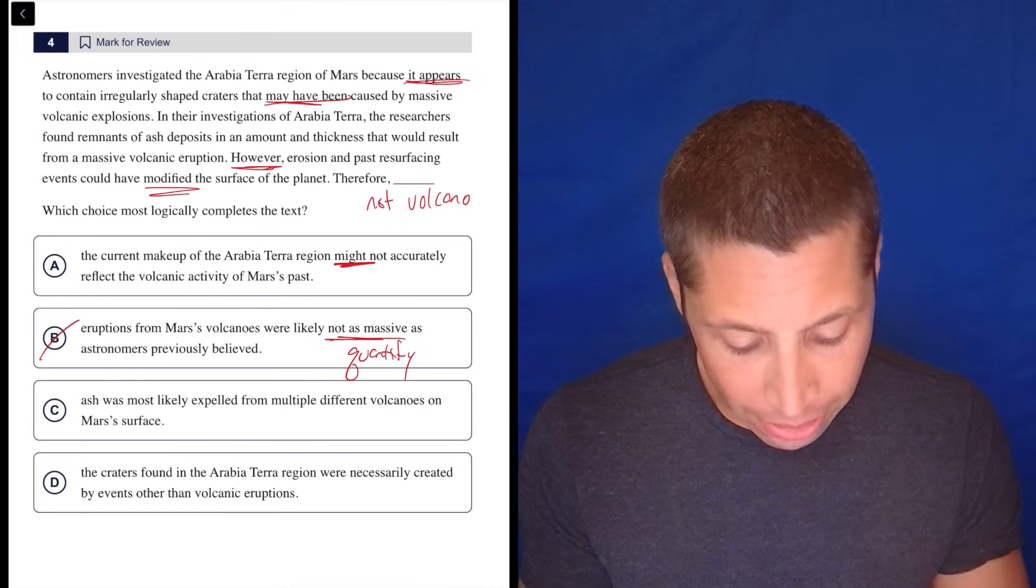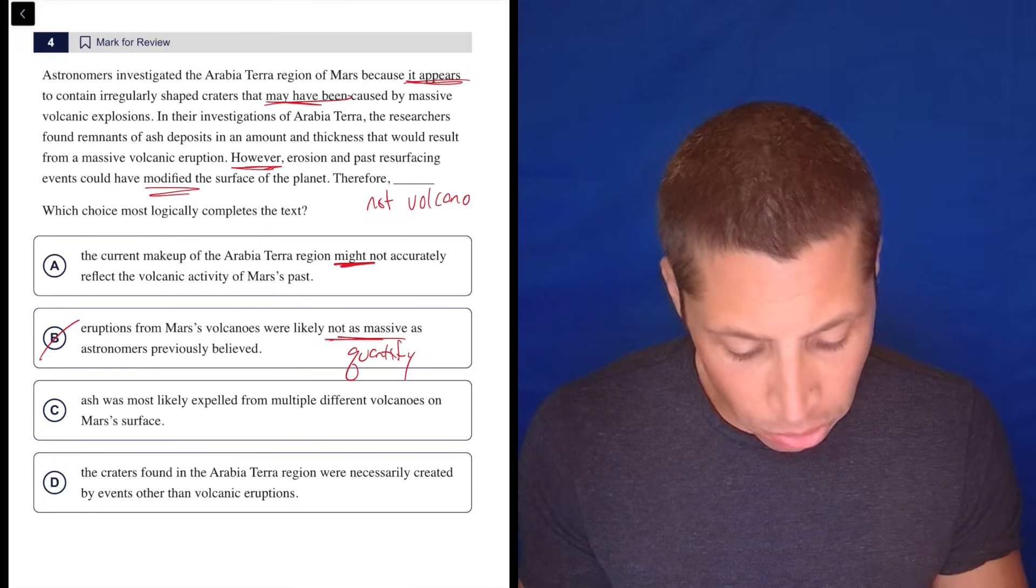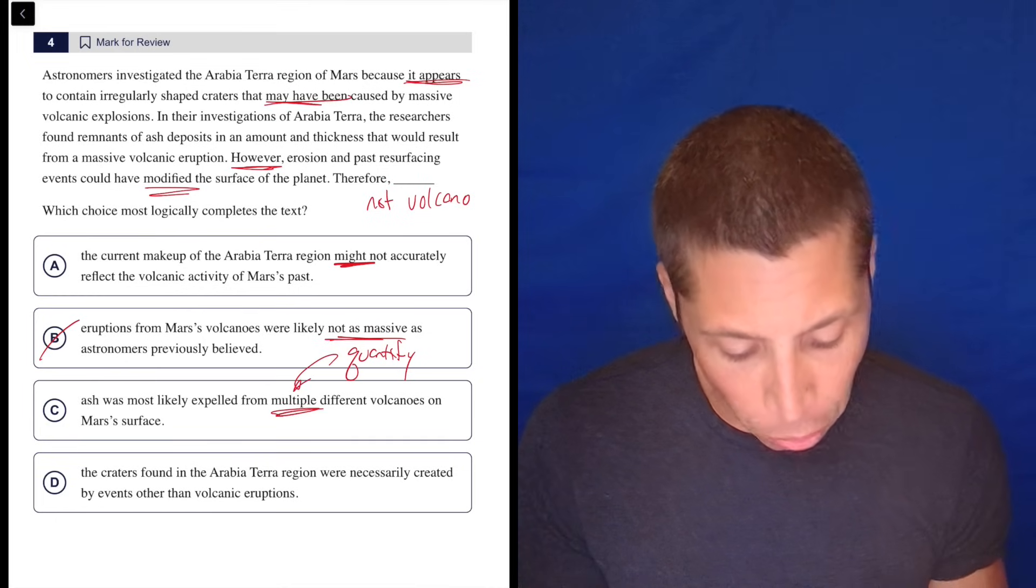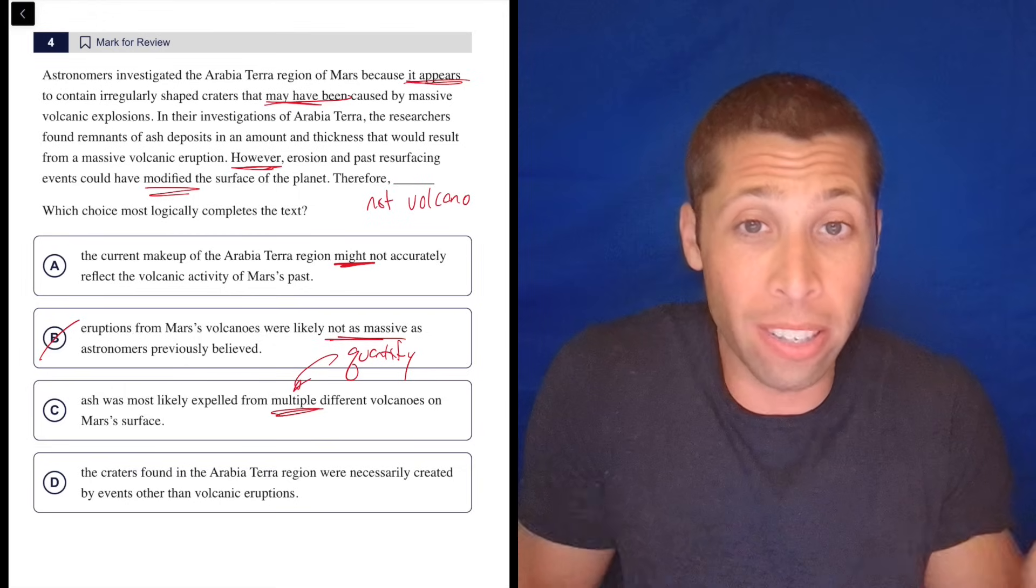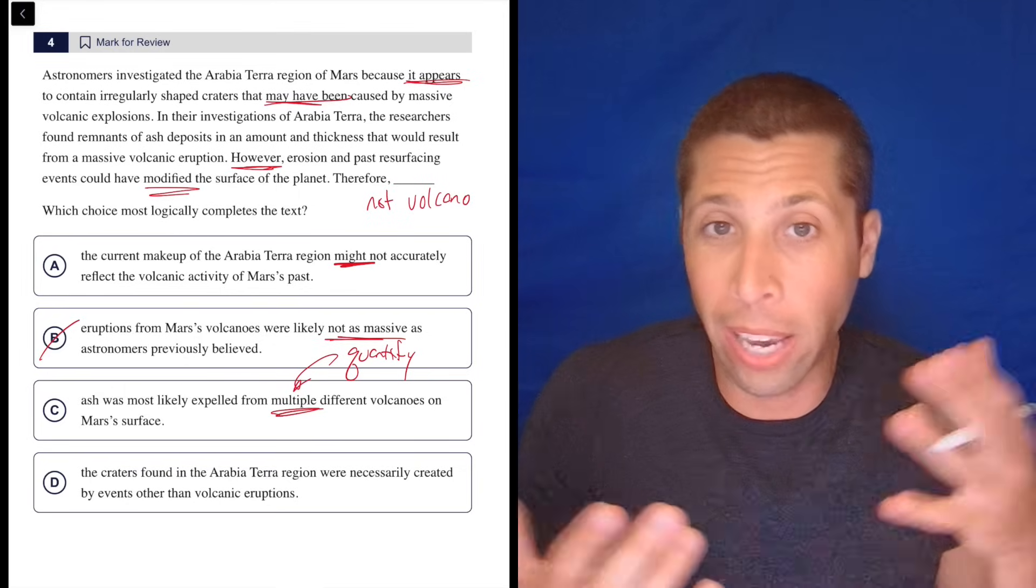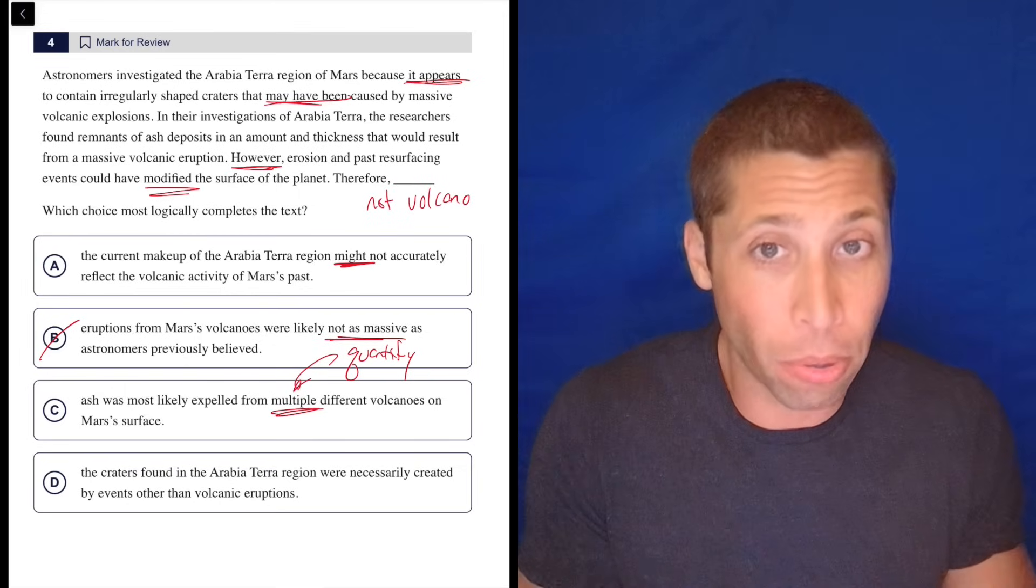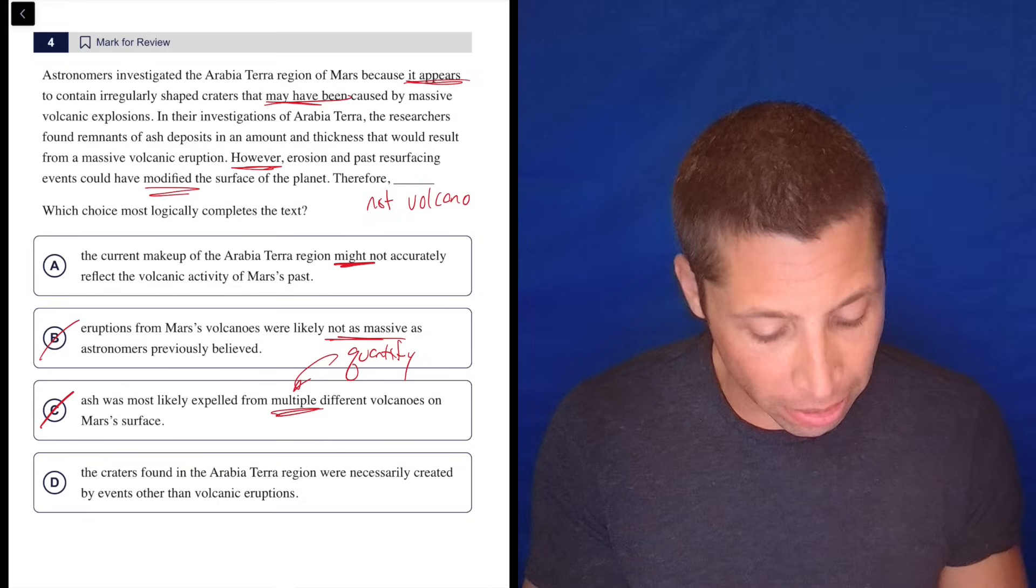C, ash was most likely expelled from multiple different volcanoes. Again, the quantifier, right? Multiple volcanoes. That's not – they're not really saying – that's not the debate or at least not that it seems to me that it was one volcano multiple, right? They're not talking about the number of volcanoes in this passage. So I don't want to talk about it in the choice.